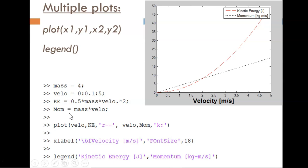Now I get to the key part, making the plot. The first three input arguments plot KE versus velo as a red dashed line. The next three input arguments plot mom versus velo as a black dotted line. Even though velo was the x vector for both, we are required to explicitly define it for each line.